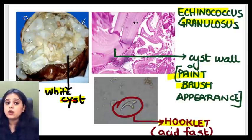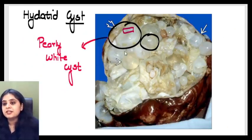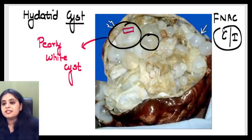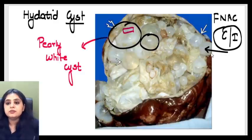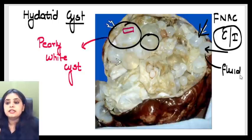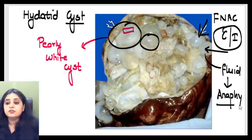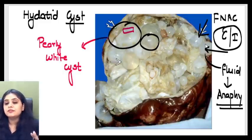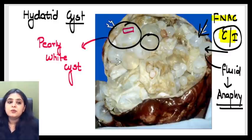One last question: is any investigation modality contraindicated in this? In a hydatid cyst, FNAC is contraindicated. Why? Because if you end up putting a needle into these cysts and the cyst wall ruptures or the fluid comes out, it can result in anaphylactic shock or anaphylaxis. This fluid should not leak out within the body, otherwise it can have grave consequences. FNAC is contraindicated — a famous exam question.